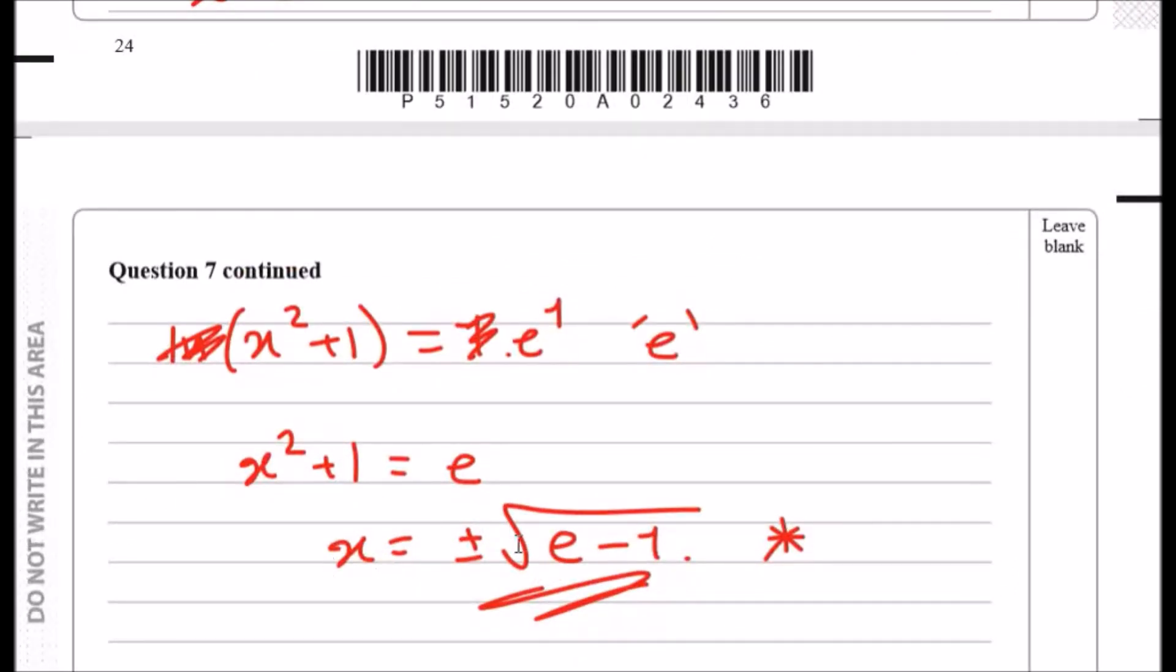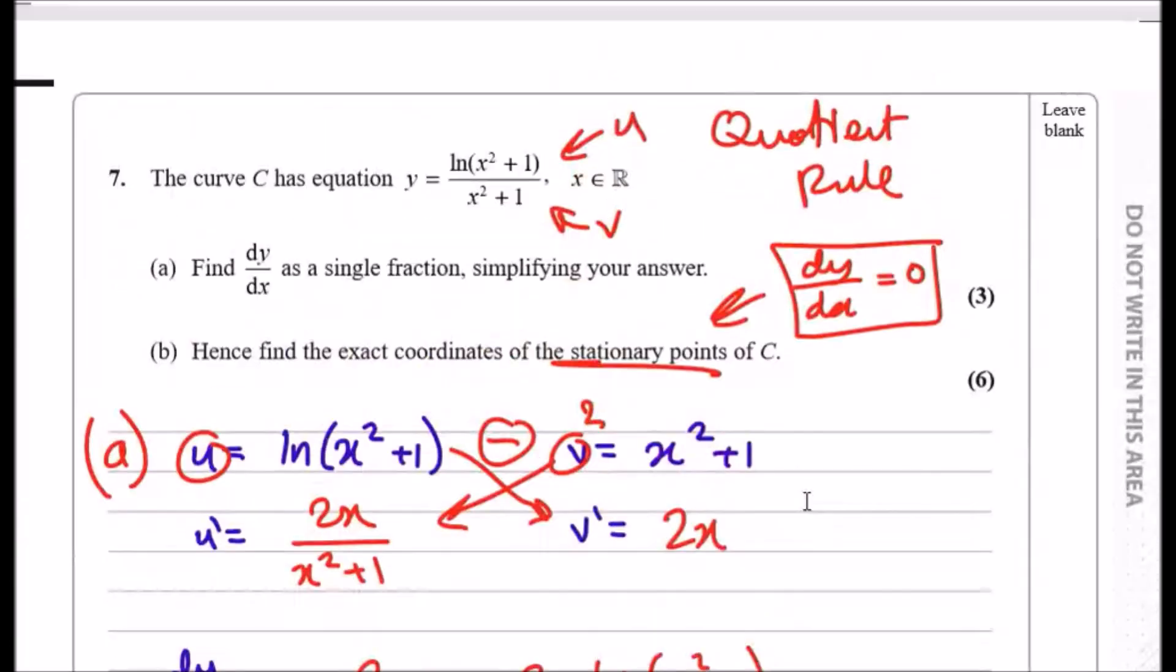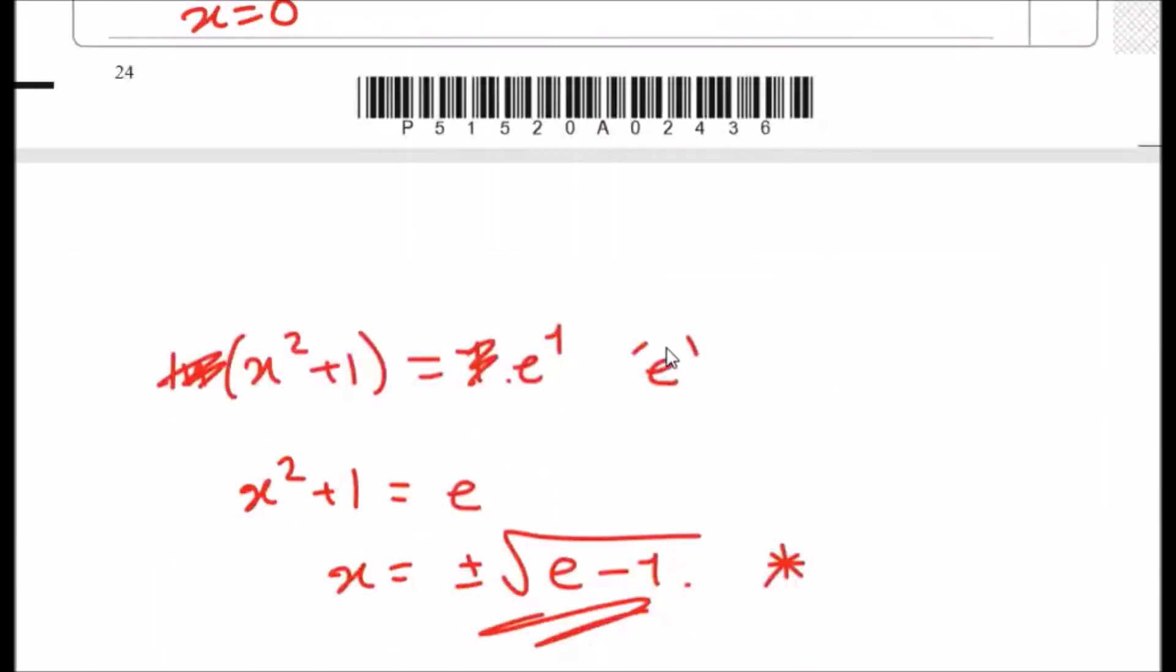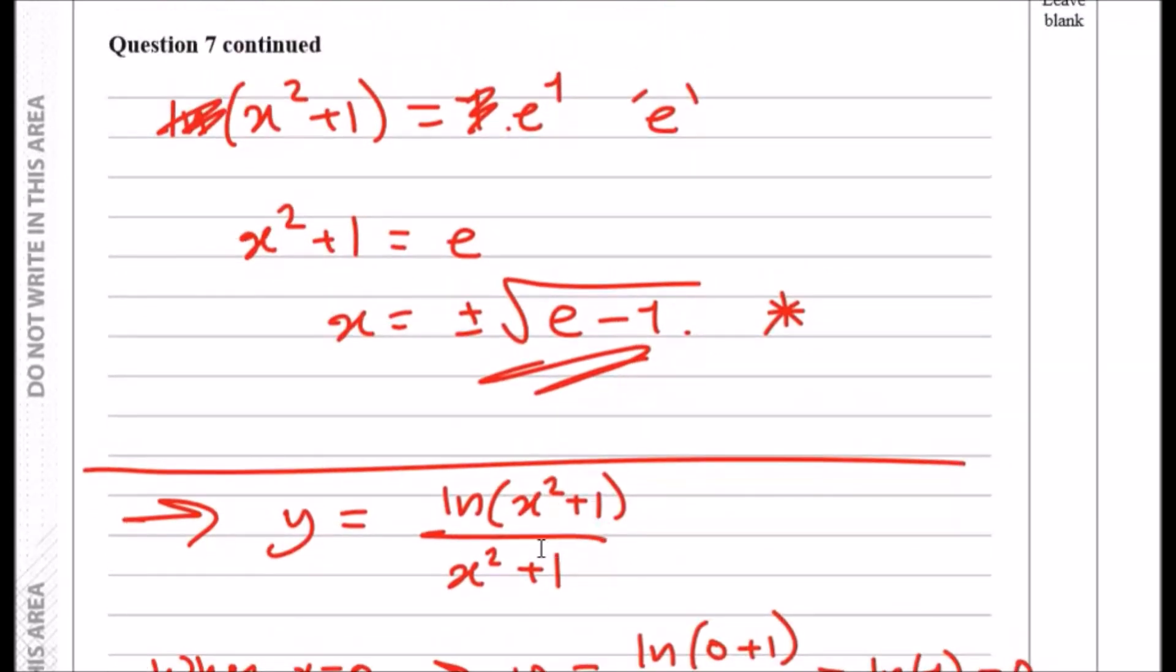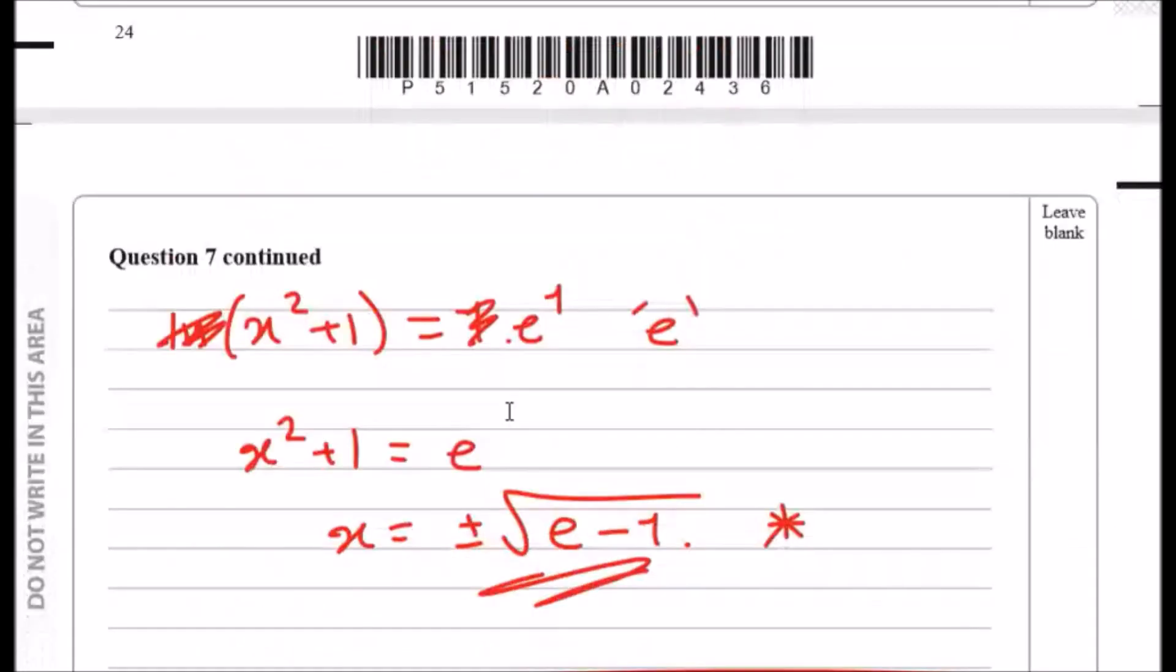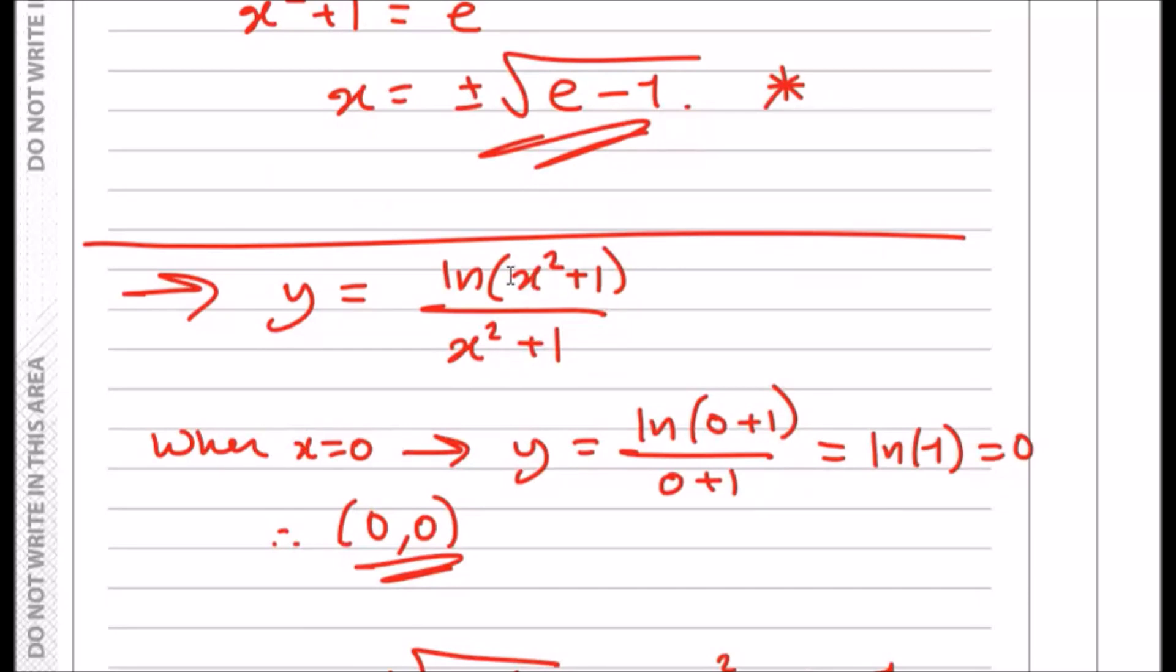Now that we found x, all you need to do is literally plug into y, because remember you're trying to find the stationary points, and that means you need to find the x and y solution. Using the first solution, when x equals zero, plug in x equals zero into this equation. You're going to have ln of zero plus one over zero plus one, and you're just left with ln one, and that gives you zero. So that means the y coordinate is zero when x is zero.